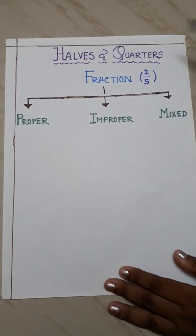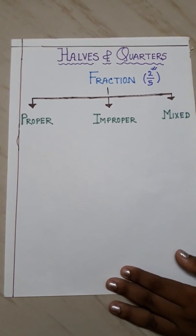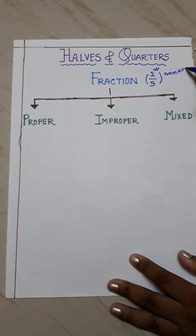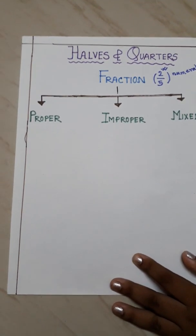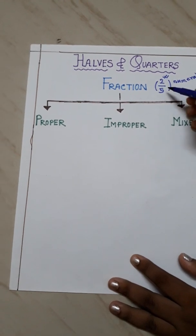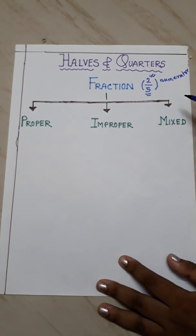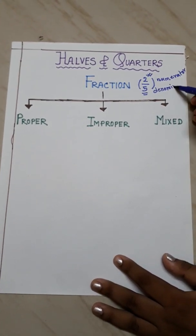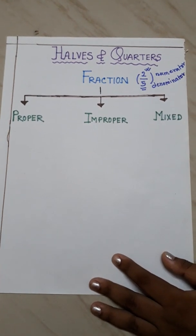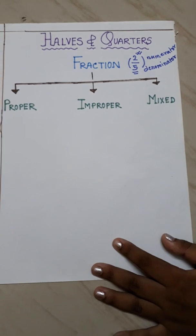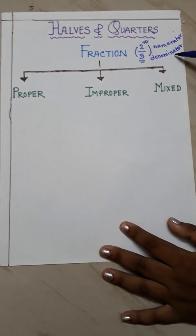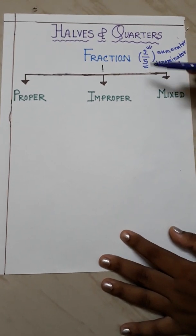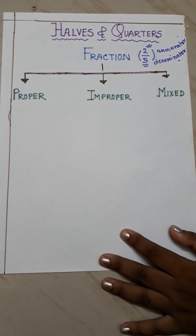The upper one, that is the 2, is called the numerator — spelled N-U-M-E-R-A-T-O-R. And the below one is called the denominator — spelled D-E-N-O-M-I-N-A-T-O-R. So a fractional number consists of two numbers: numerator and denominator. The upper one is called the numerator and the lower one is called the denominator.